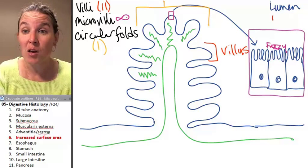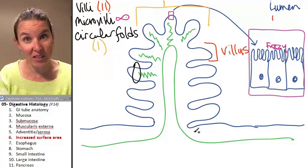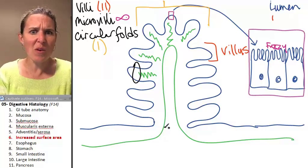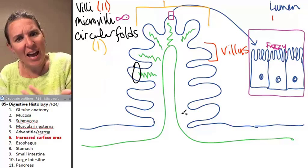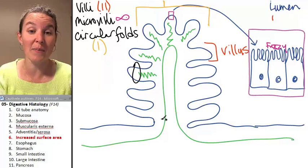And you can tell because you know this whole thing is a villus. And so then we've got this other extension out. Well, that extension is a circular fold.